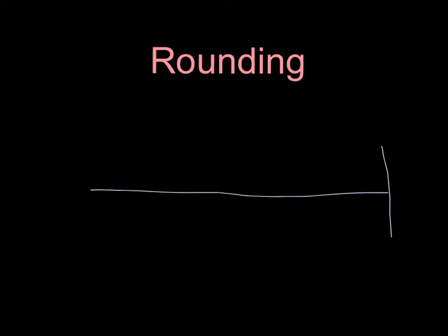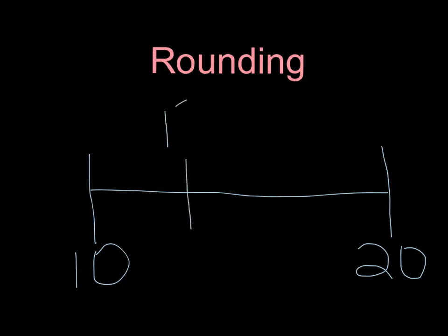So when we're talking about rounding, what we mean is we're finding which 10 a number is nearest to on a number line. So for example, if I have my number line between 10 and 20, and I was looking at the number 13, rounding means I'm going to decide if the number 13 is closer and nearest to 10 or if it's nearest to 20. So when you hear me say rounding, we're thinking about what 10 is our exact number nearest to.